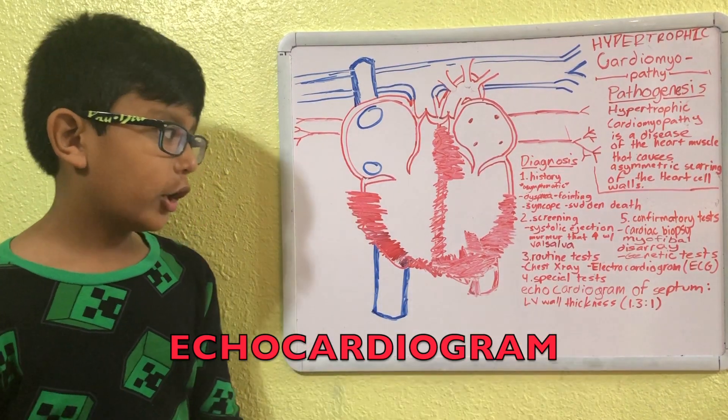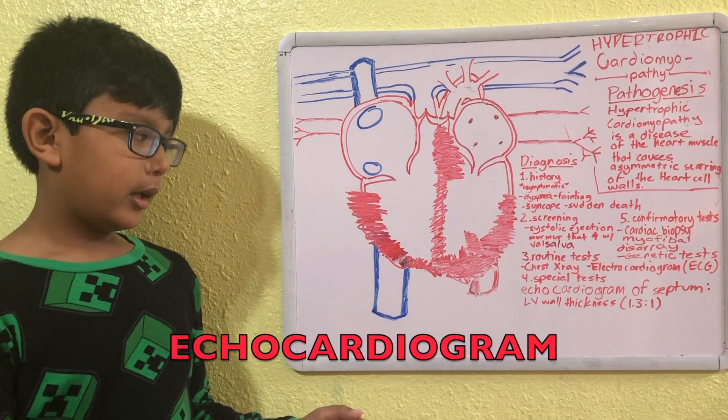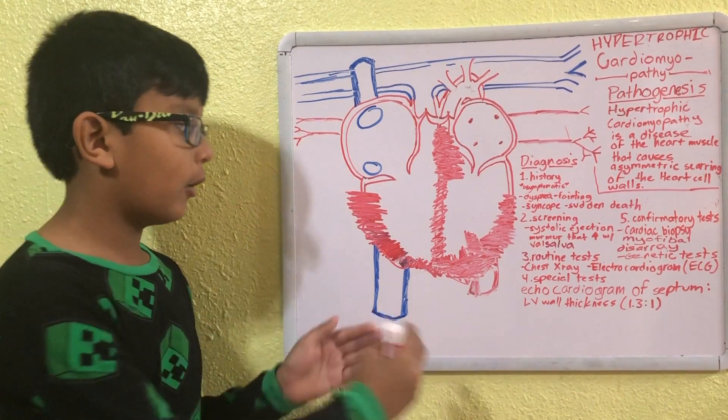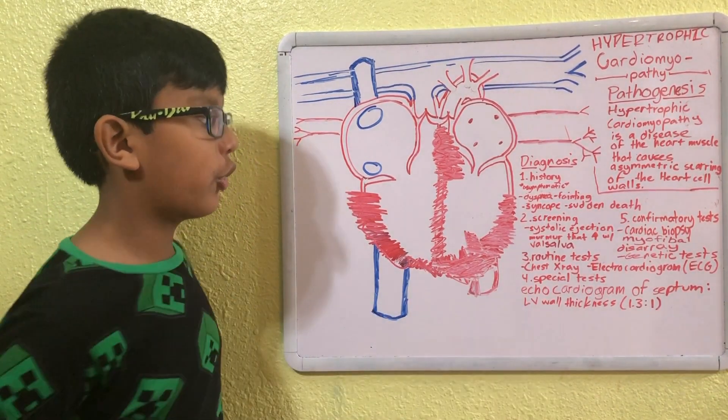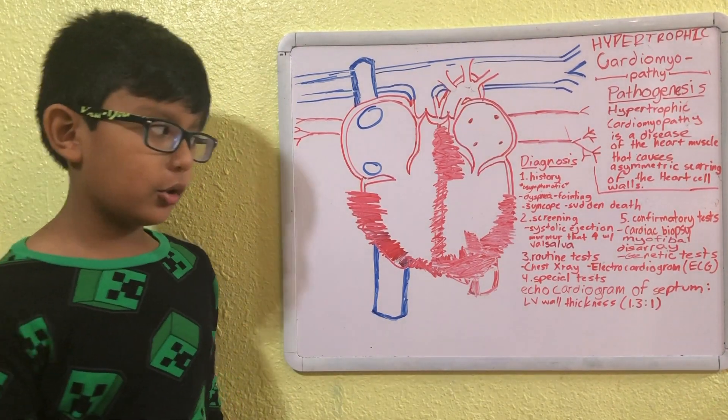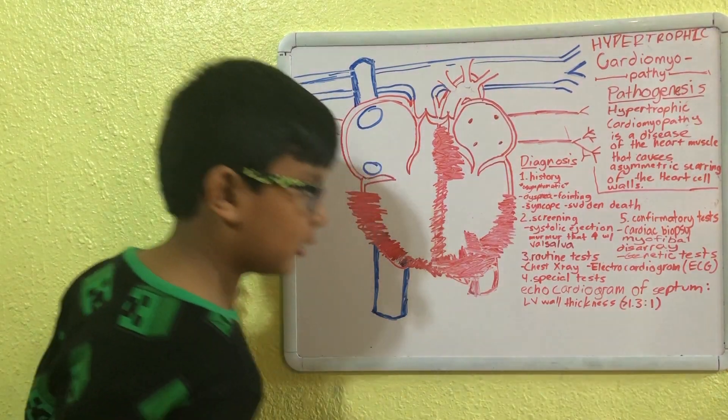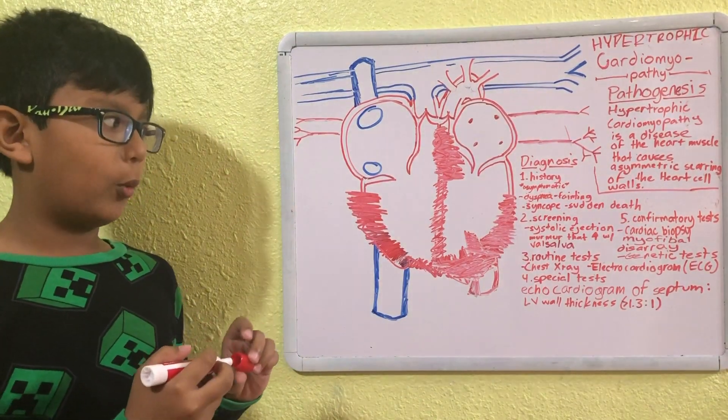echocardiogram of the septum, and we're going to take that number and the left ventricle wall thickness and we're going to put them in a ratio. Usually this ratio is going to be greater than 1.3 to 1.